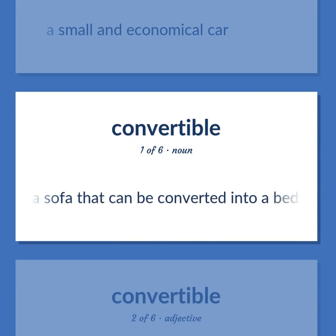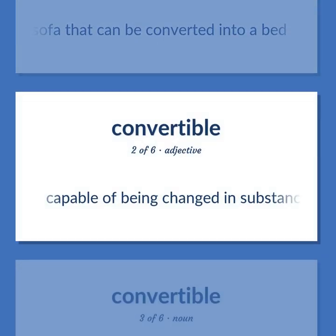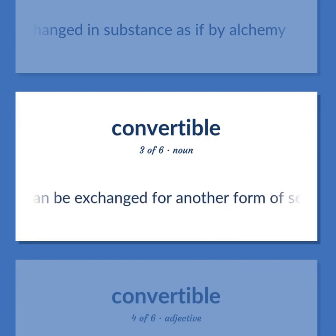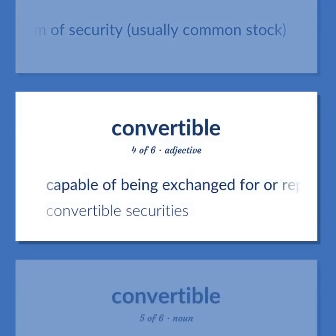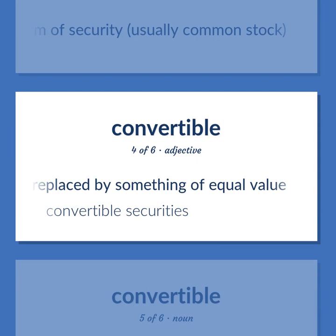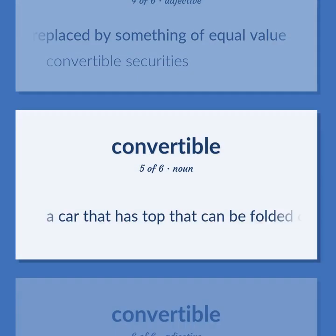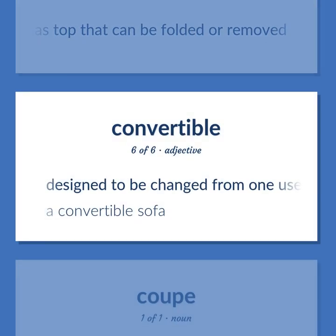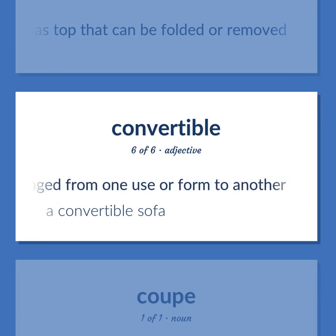CONVERTIBLE: A sofa that can be converted into a bed. Capable of being changed in substance as if by alchemy. A corporate security — usually bonds or preferred stock — that can be exchanged for another form of security, usually common stock. Capable of being exchanged for or replaced by something of equal value — convertible securities. A car that has a top that can be folded or removed. Designed to be changed from one use or form to another.